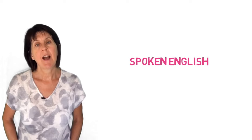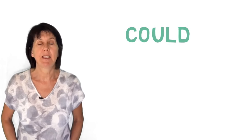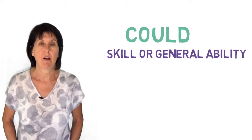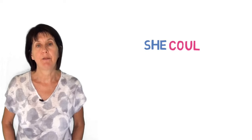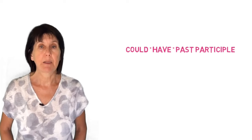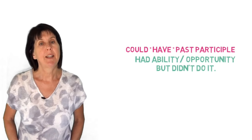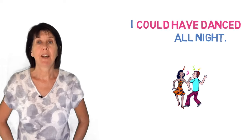Generally we use can and can't in spoken English rather than be able to, as it's shorter and less formal. Now let's look at could. We use could to talk generally about someone's skill or ability in the past. So she could swim like a fish, or they couldn't sing very well. We use could plus have plus the past participle to say that someone had the ability or the opportunity to do something but didn't do it. For example, I could have danced all night but I didn't.